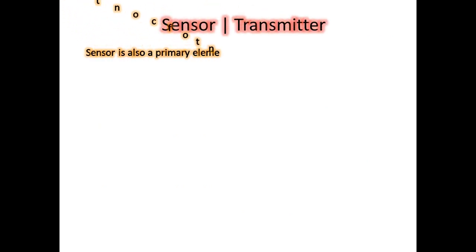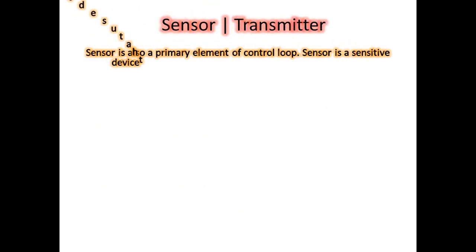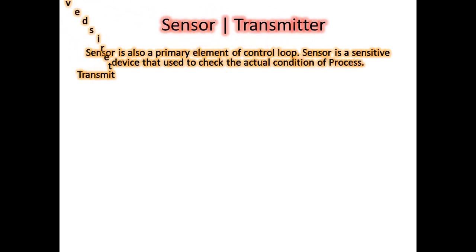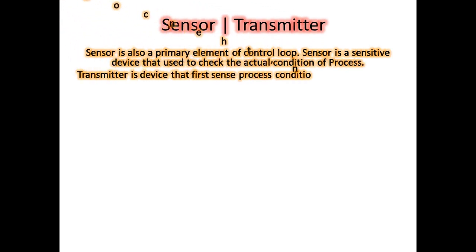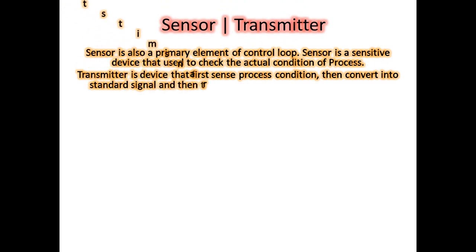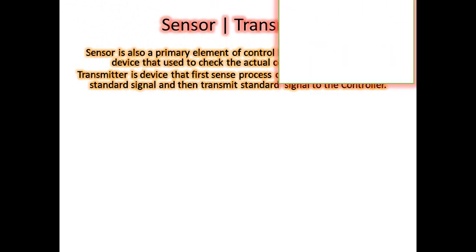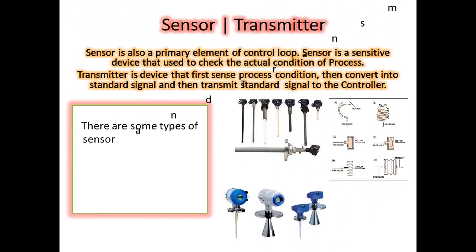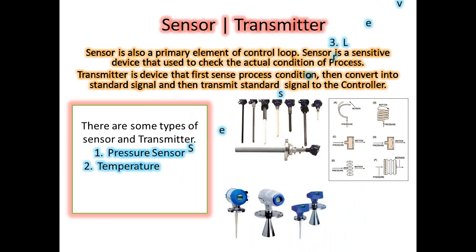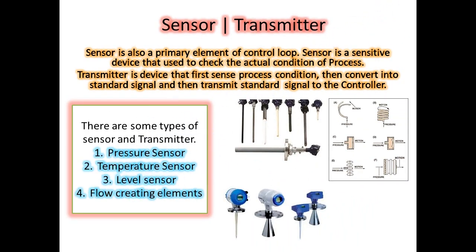A sensor is also a primary element of the control loop. It is a sensitive device used to check the actual condition of the process. A transmitter is a device that first senses process variables or process conditions, then converts them into standard signals, and then transmits those standard signals to the controller.